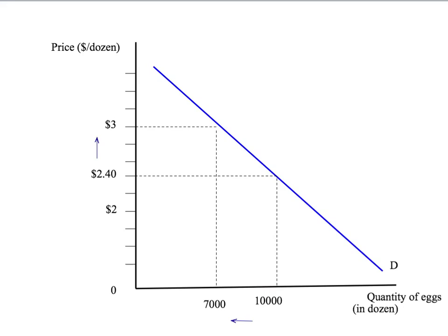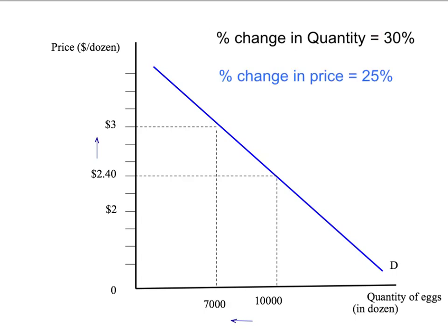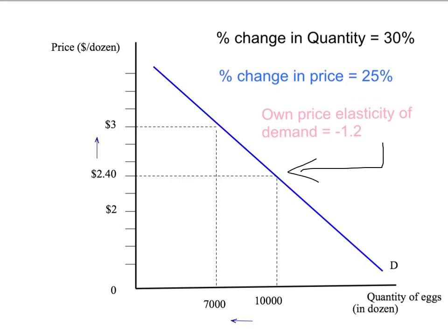Let's suppose that the price goes up from $2.40 up to $3. That leads to a reduction in the quantity of eggs demanded from 10,000 down to 7,000. So our percentage change in quantity: quantity has fallen by 3,000 from our initial level of 10,000, so that's 3 divided by 10, a 30% change in quantity demanded. Our price has gone up by 60 cents from the original level of $2.40, so that's a 25% increase in price. The own price elasticity of demand at the price of $2.40, when 10,000 dozen eggs are demanded, is 30% divided by 25%, giving an own price elasticity of minus 1.2.